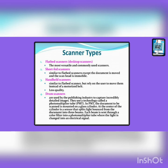Fourth category is the drum scanners. These are used by the publishing industry to capture incredibly detailed images. They use a technology called photo multiply tube (PMT). In PMT, the document to be scanned is mounted on a glass cylinder. At the center of the cylinder is a sensor that splits light bounced from the document into three beams. Each beam is sent through a color filter into a photo multiply tube where the light is changed into an electronic signal.